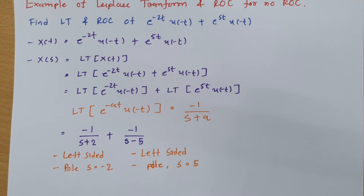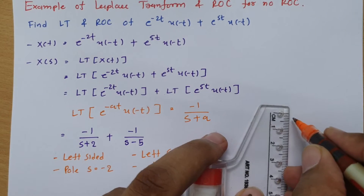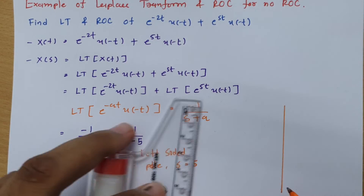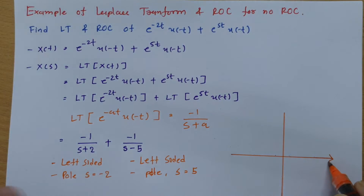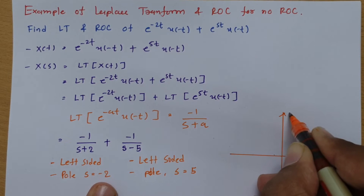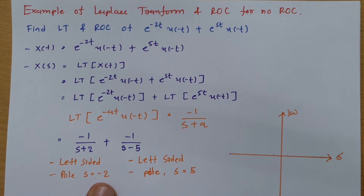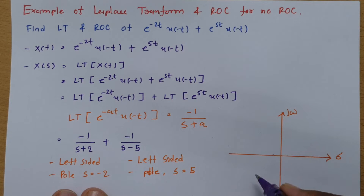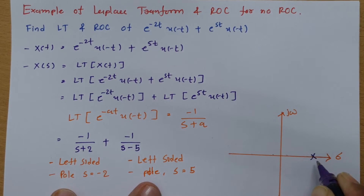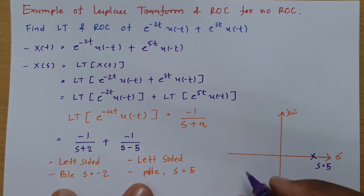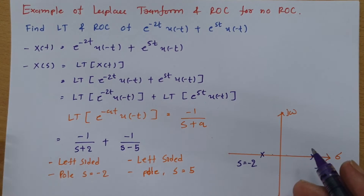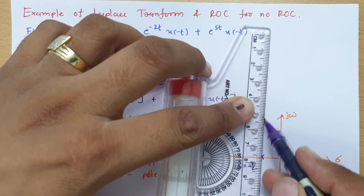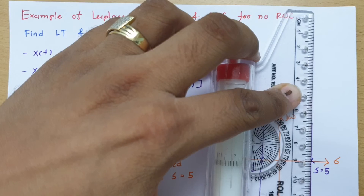To find the region of convergence we need the s-plane. In the s-plane, the horizontal axis is the real part sigma and the vertical axis is the imaginary part jω. We mark the first pole at s = +5 and the second pole at s = -2. For the ROC, we draw lines parallel to the imaginary axis through each pole.